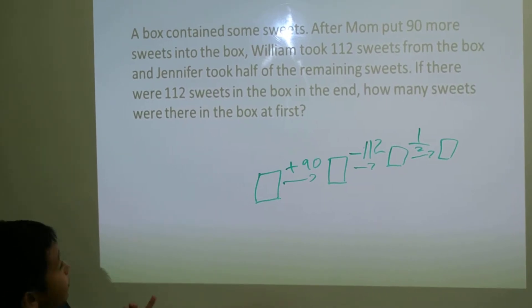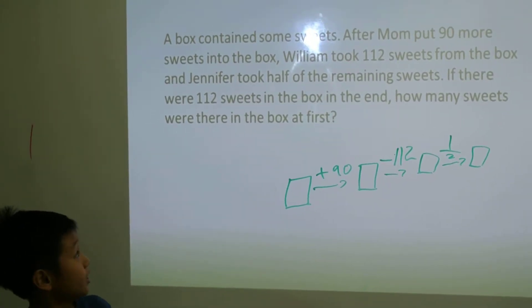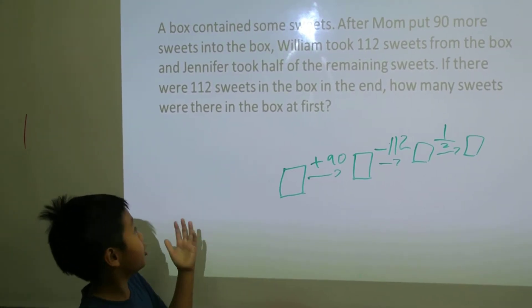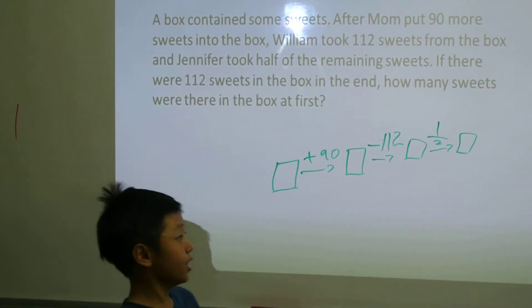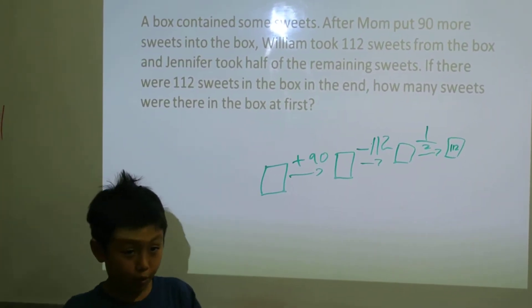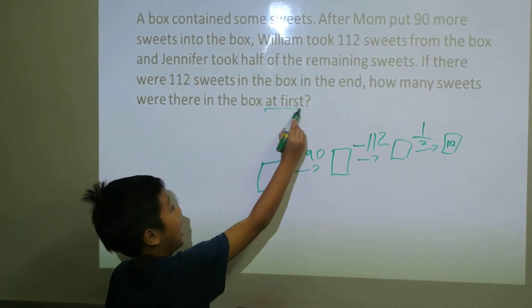Now let's see the question. If there were 112 sweets in the box at the end, how many sweets were there in the box at first? So in the end, it's 112.